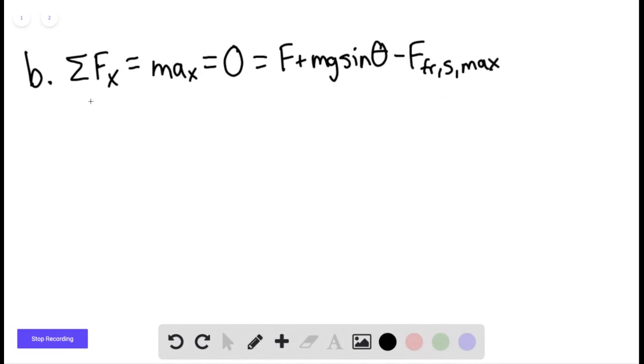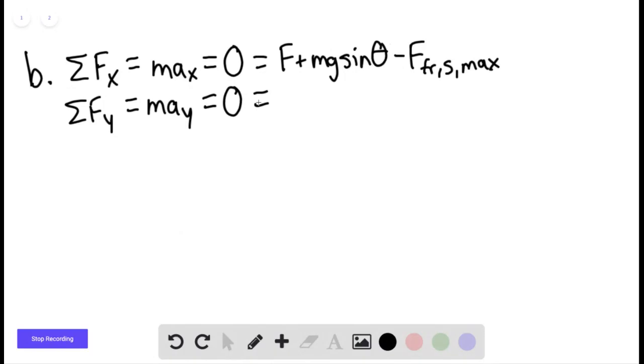The sum of forces in the y direction would be equal to the mass times the acceleration in the y direction. This would also be equal to 0 because the system has translational equilibrium in both the x and y directions. This would equal force normal minus mg cosine of theta.